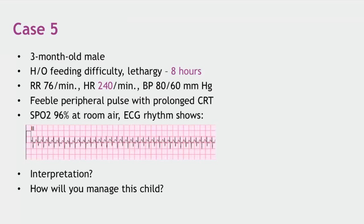Another common pitfall is reluctance to use defibrillators. Defibrillators are available in most places, even in malls and large complexes, yet residents hesitate to use them. When there is a clear indication — such as signs of poor peripheral perfusion as in this case — one must proceed with synchronized cardioversion without delay, rather than waiting to establish IV access or trying adenosine first.